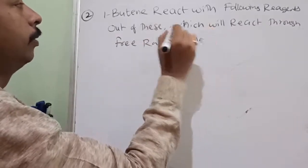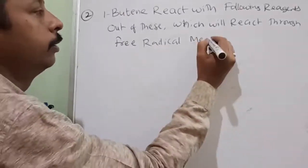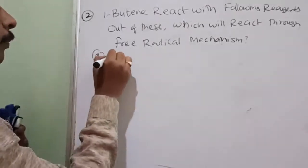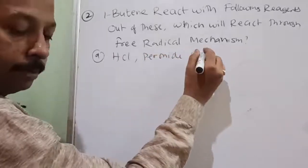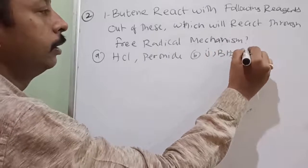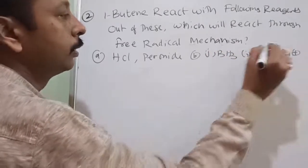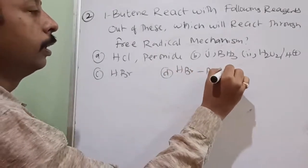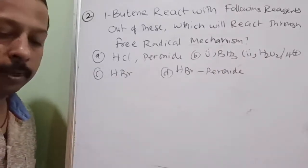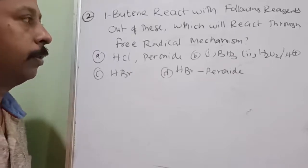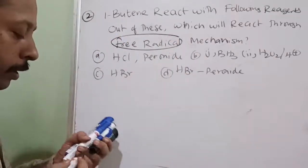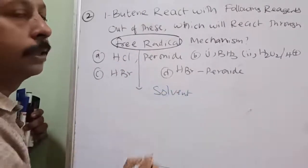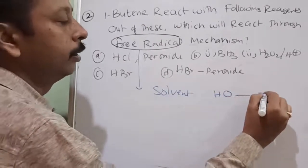Free radical will be generated when the solvent itself is non-polar — like peroxide. In peroxide, free radical mechanism takes place when there is homolytic fission. See, when this bond is broken, obviously this electron will go this side and this electron will go this side. So what it will create? Two moles of free radical. In the presence of free radical, whatever is there, they also undergo free radical mechanism.